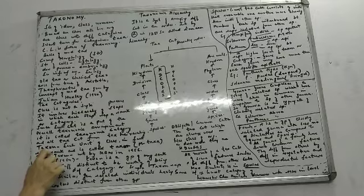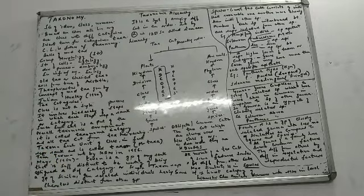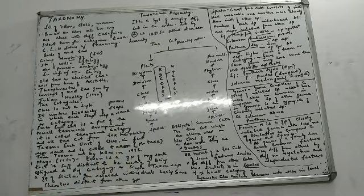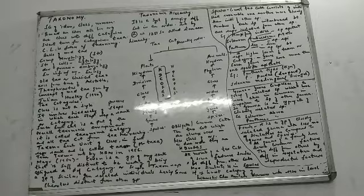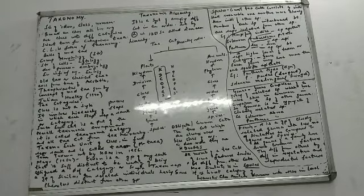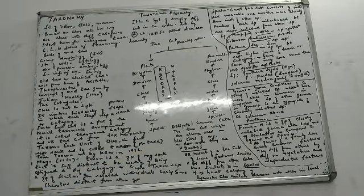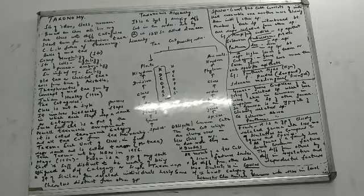Each unit of classification and each rank is what we call a taxon. Each category, each level, each rank is a taxon. The plural is taxa. Singular is taxon, plural is taxa — each rank in a hierarchy is what we call a taxon.